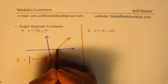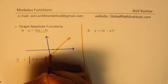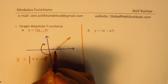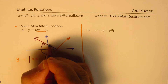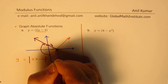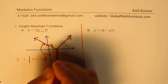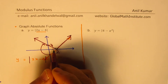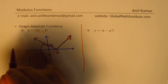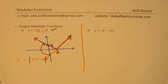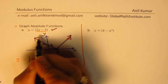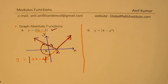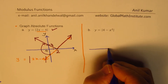Now for y equals the absolute value of 2x minus 4, the negative part must be reflected to become positive. This portion gets reflected and what we get is a line going through 4 on the y-axis, and the function is definitely zero at x equals 2. That is the graph of y equals the absolute value of 2x minus 4.